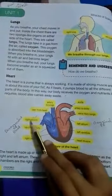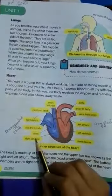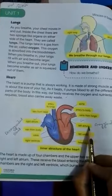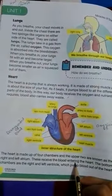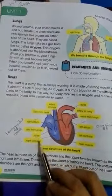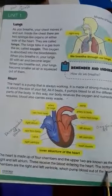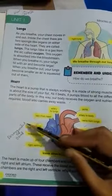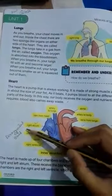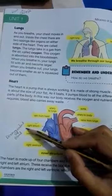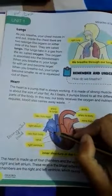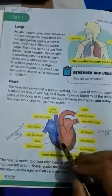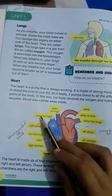The heart consists of four chambers: right atrium, left atrium, right ventricle, and left ventricle. The right atrium and left atrium receive blood entering the heart, while the left ventricle and right ventricle pump blood out of the heart. The right portion of the heart — the right atrium and right ventricle — receives deoxygenated blood, which means blood having no oxygen. They take deoxygenated blood from the body and send it to the lungs for oxygenation.